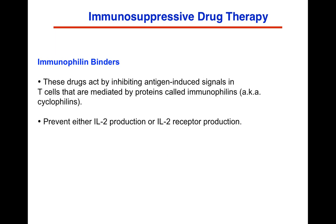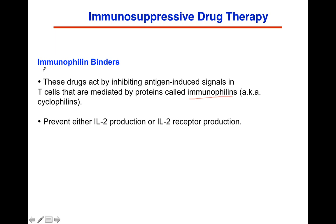Another class is referred to as the immunophilins. These are drugs that act by inhibiting antigen-specific signals in T-cells mediated by proteins called immunophilin binders. They prevent IL-2 production or IL-2 receptor production or activation. We'll talk about three drugs: two that do this, and one that acts through immunophilins via a different mechanism.